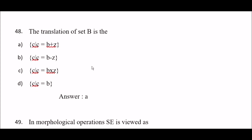Next question: the translation of set B is defined as — option A: {c | c = b + z}, option B: {c | c = b − z}, option C: {c | c = b × z}, option D: {c | c = b}. The right answer is option A — {c | c = b + z}.